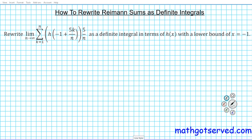The question reads: rewrite the limit as n approaches infinity of the discrete sum from k equals 1 to n of the quantity h of negative 1 plus 5k over n, times 5 over n, as a definite integral in terms of h of x with the lower bound of x equals negative 1.